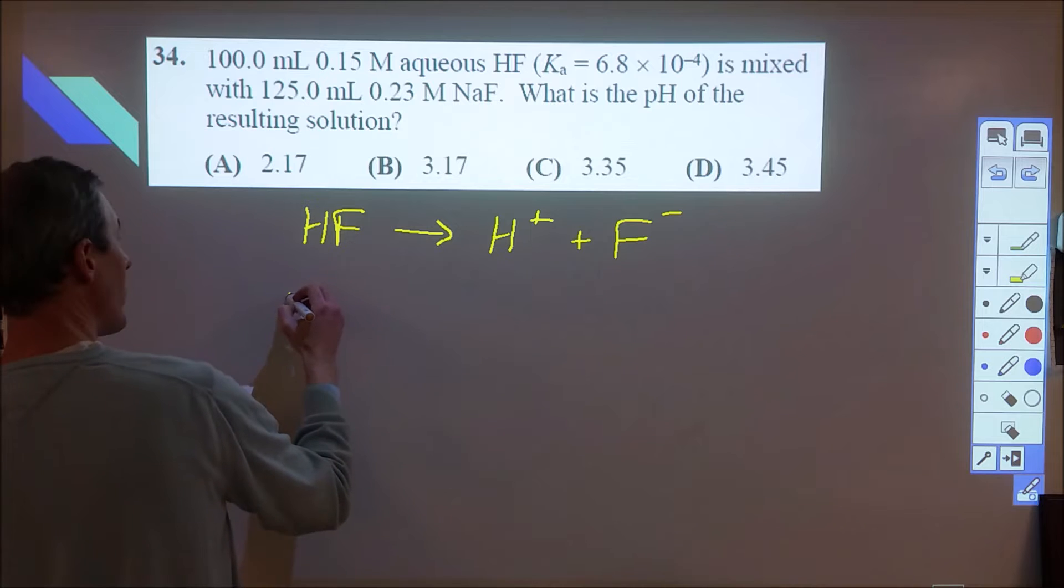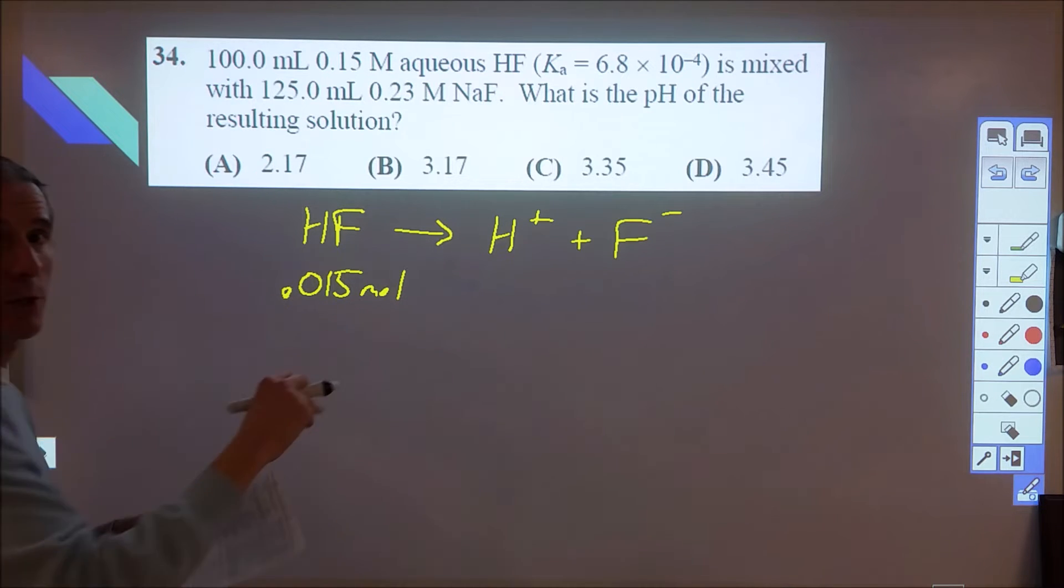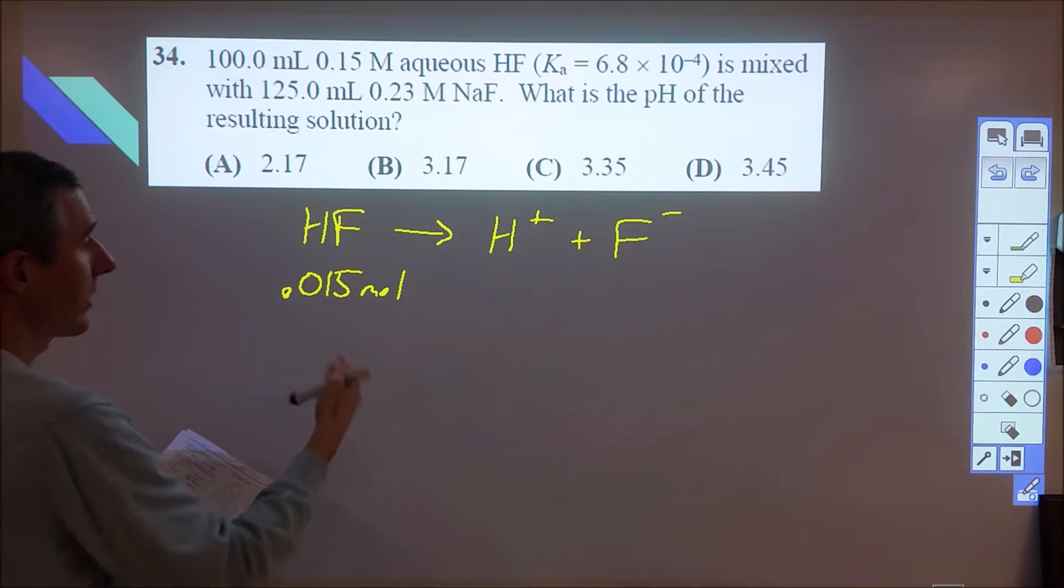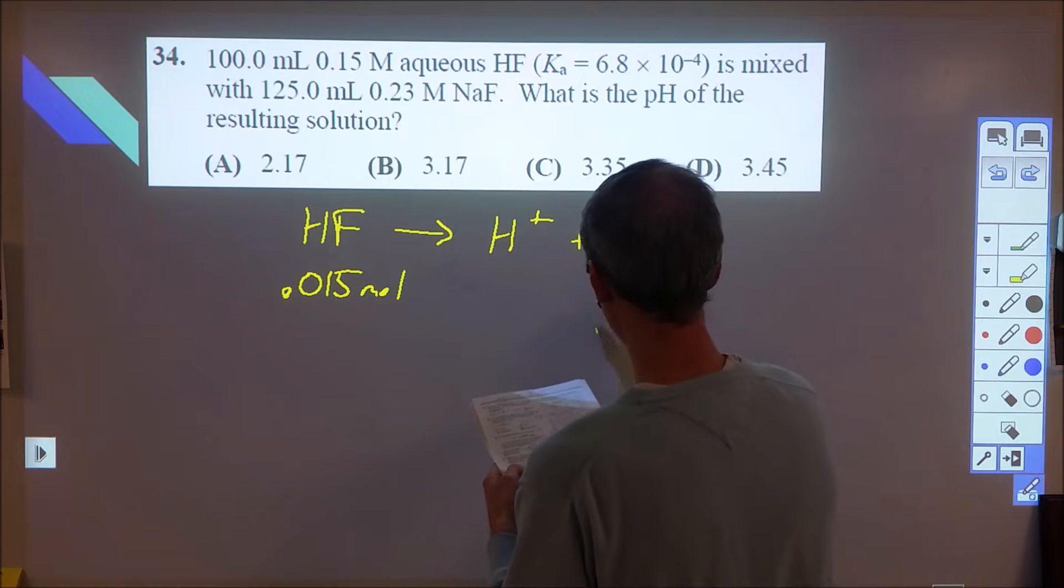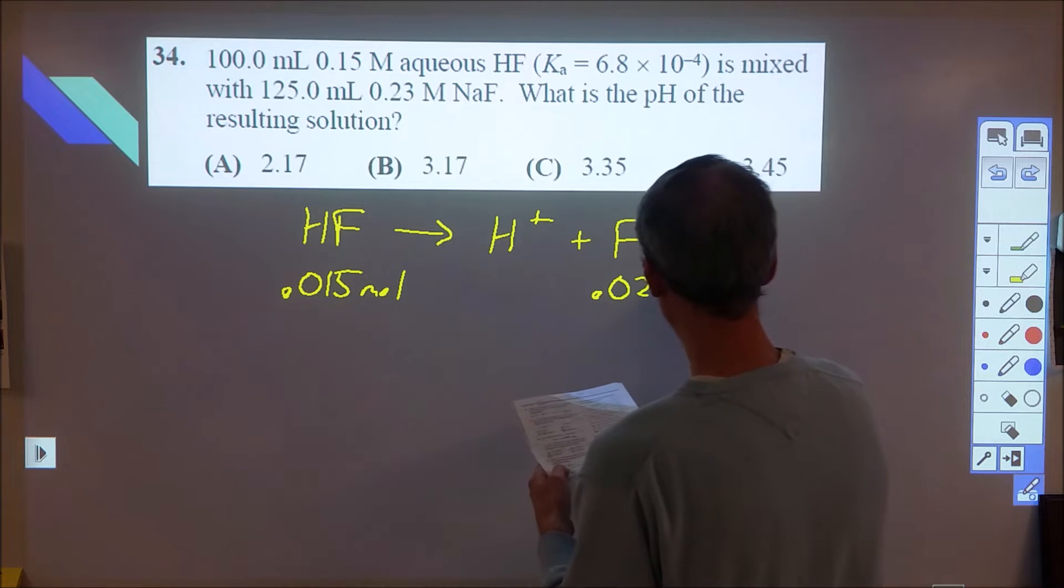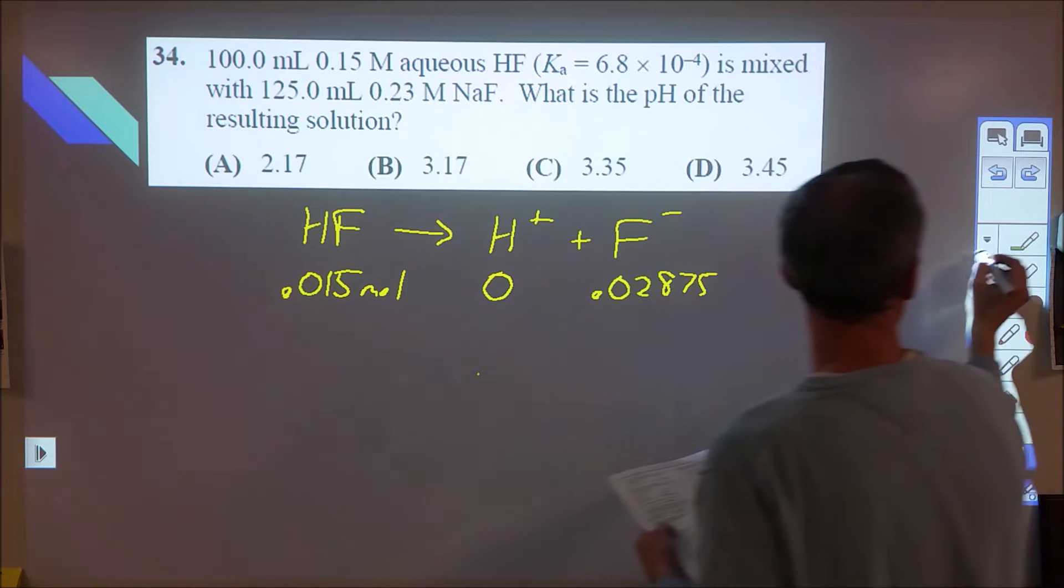Okay, so the HF I ended up with 0.015 moles, and I'm going to use these in an ICE chart because they're both going to be divided by the same volume, and they're later going to cancel that volume out, so I can just keep them as is. And then this ended up being 0.02875. And then this, I'm going to assume it's 0, really it's 10 to the negative 7.